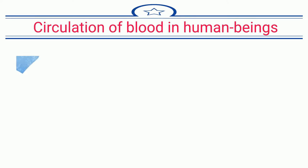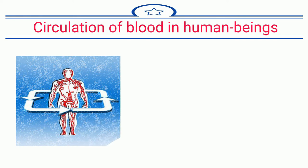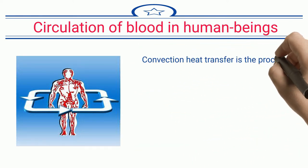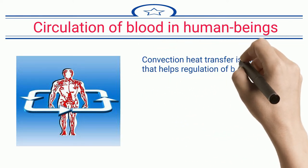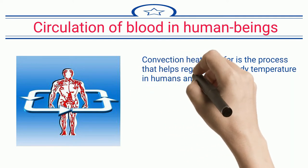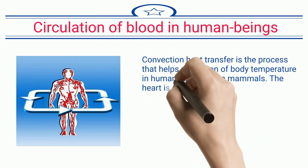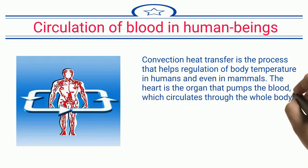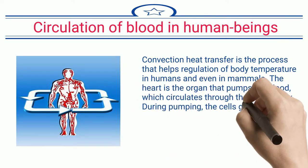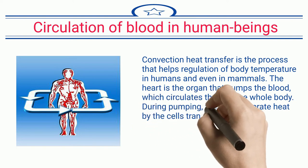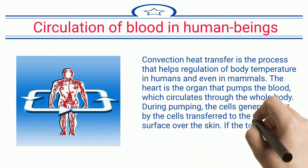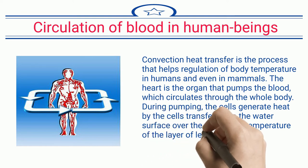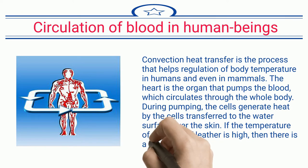Circulation of Blood in Human Beings: Convection heat transfer is the process that helps regulation of body temperature in humans and even in mammals. The heart is the organ that pumps the blood, which circulates through the whole body. During pumping, the cells generate heat by the cells transferred to the water surface over the skin. If the temperature of the layer of leather is high, then there is a loss of heat in the body and vice versa.